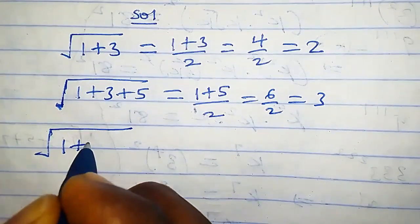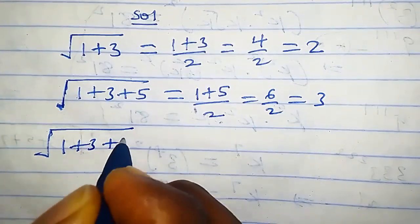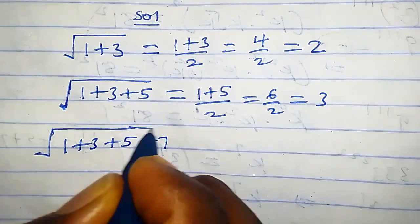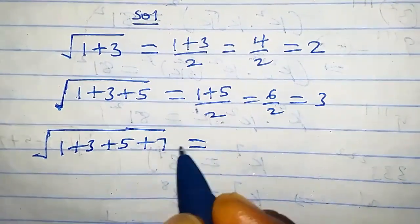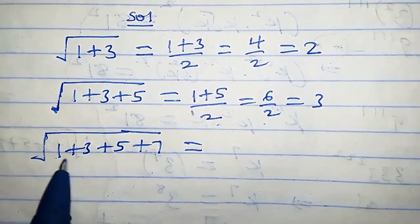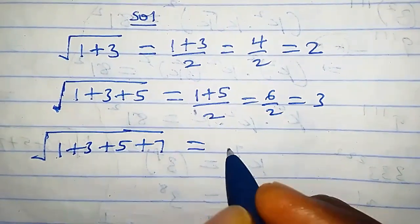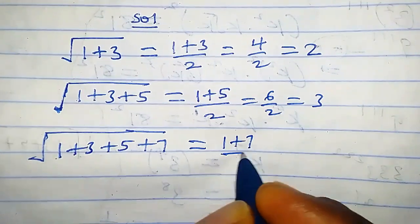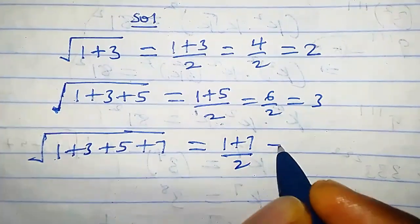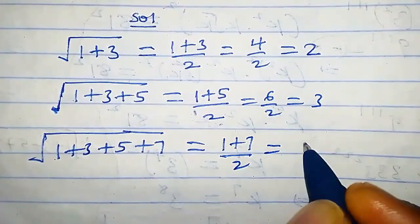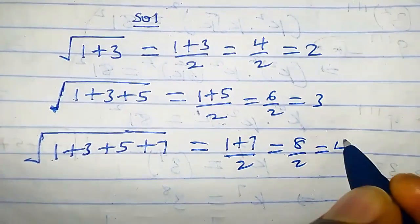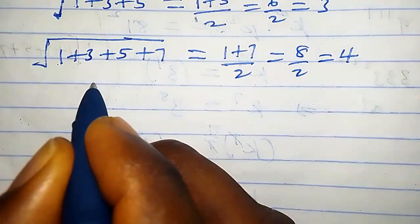So let's consider the first four terms. Square root of one plus three plus five plus seven equals — when we add the first and the last term, we have one plus seven and divide it by two. This equals eight over two, which is four.